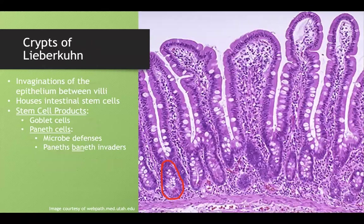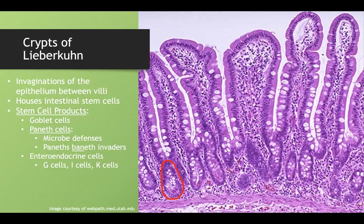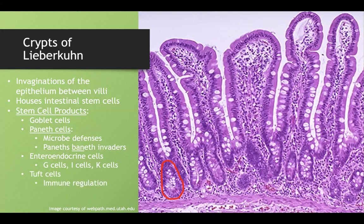Enteroendocrine cells from the crypts of Lieberkühn include G cells producing gastrin, I cells producing cholecystokinin, and K cells producing GIP. Tuft cells also live in the crypts and have nonspecific immune regulatory functions, though this is lower yield.